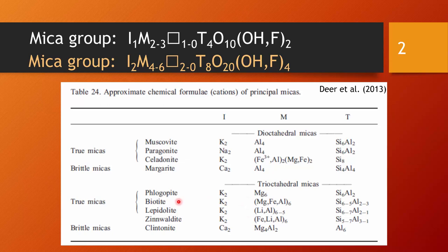The most important end members of the biotite series would be the phlogopite end member, which is simply the magnesium end member, and an iron end member, which would be the annite. The lithium bearing minerals lepidolite and zinnwaldite might be potential lithium sources.